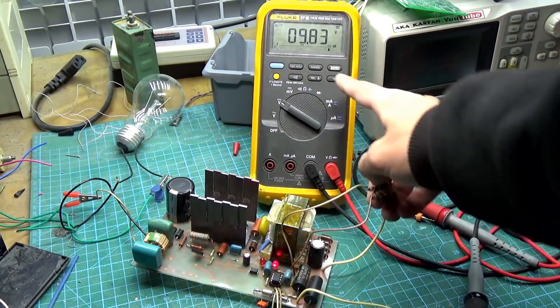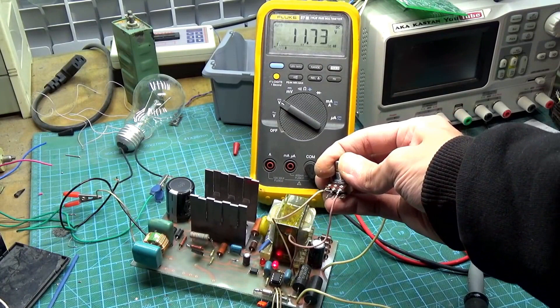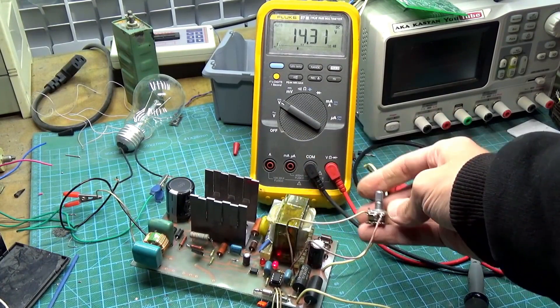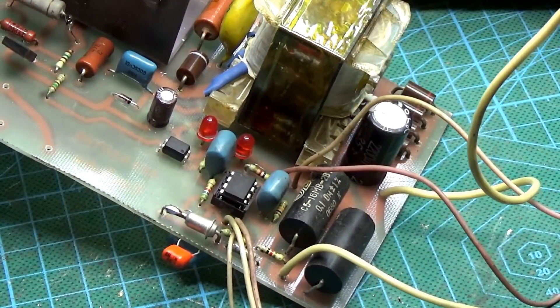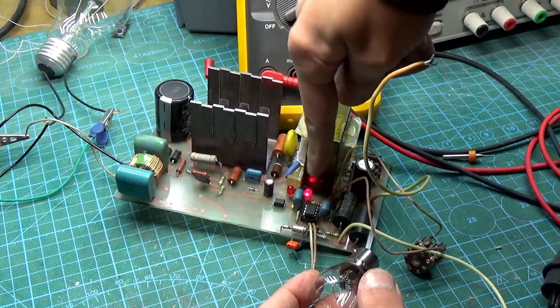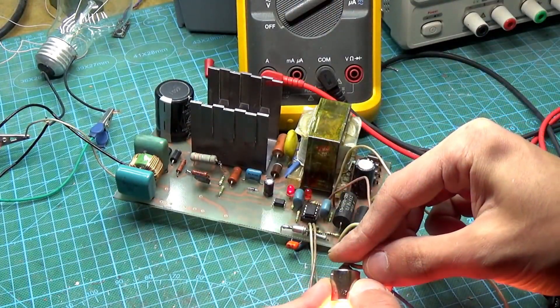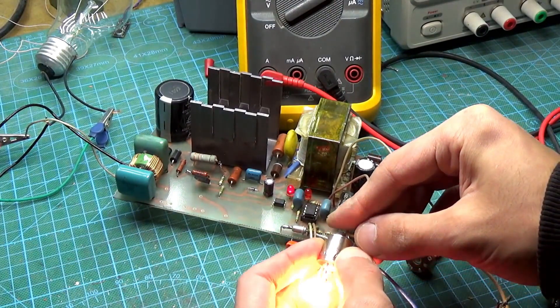Initially, I was developing not just an adjustable power supply, but a full-fledged charger with current and voltage stabilization. It even worked quite well. Hence, the messy wiring on the board. In the end, I had to redesign the control unit. I decided not to make the charger, as I'm preparing a separate video on this topic with a more advanced design. But let's return to our power supply.